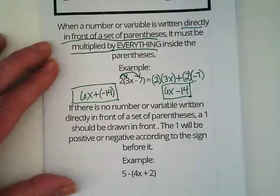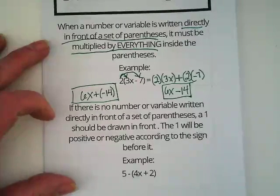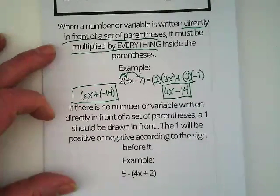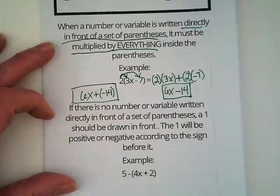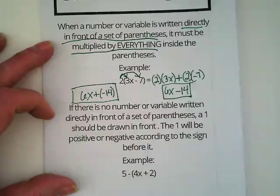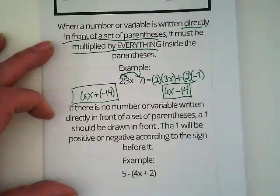Okay, our second rule about distributive property. This is the one where I see the most mistakes happen. If there is no number or variable written directly in front of a set of parentheses, a 1 should be drawn in front. The 1 will be positive or negative according to the sign before it.